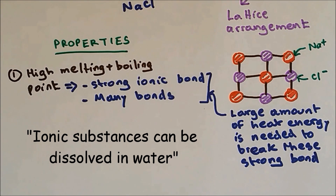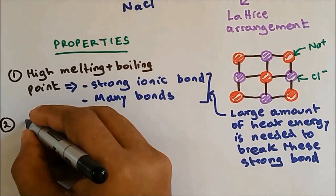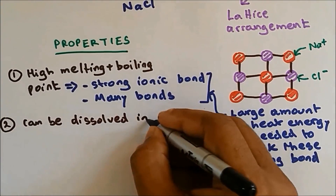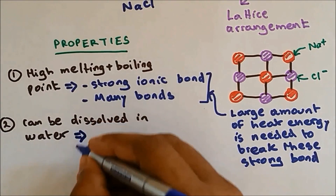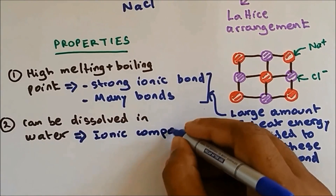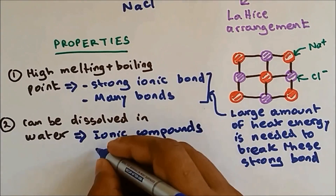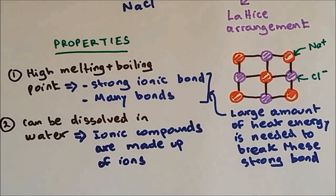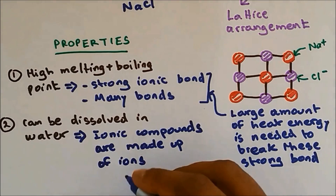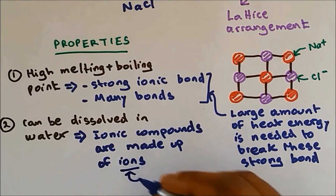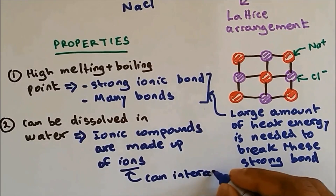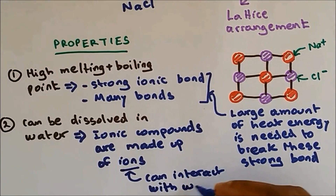The second property of giant ionic structure is that they can be dissolved in water, which means ionic compounds are soluble in water. Ionic compounds are made up of ions, and these ions can interact with water.